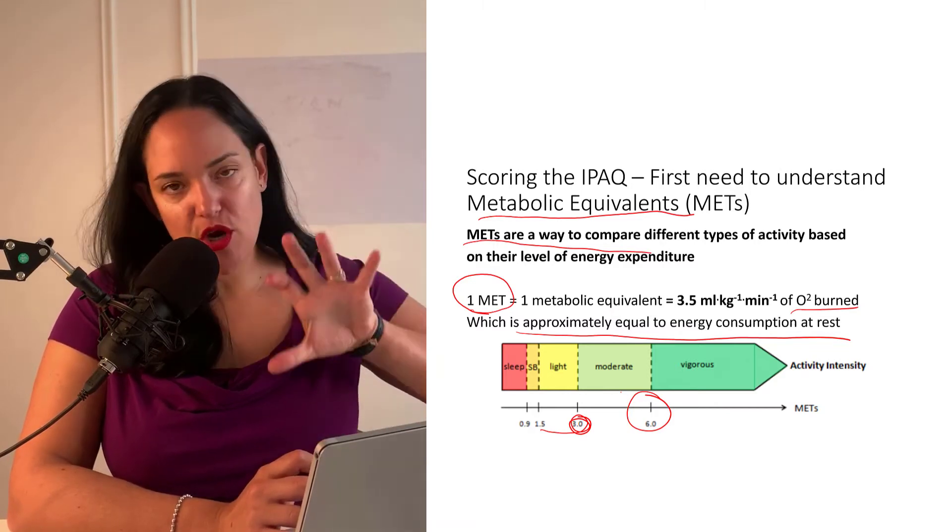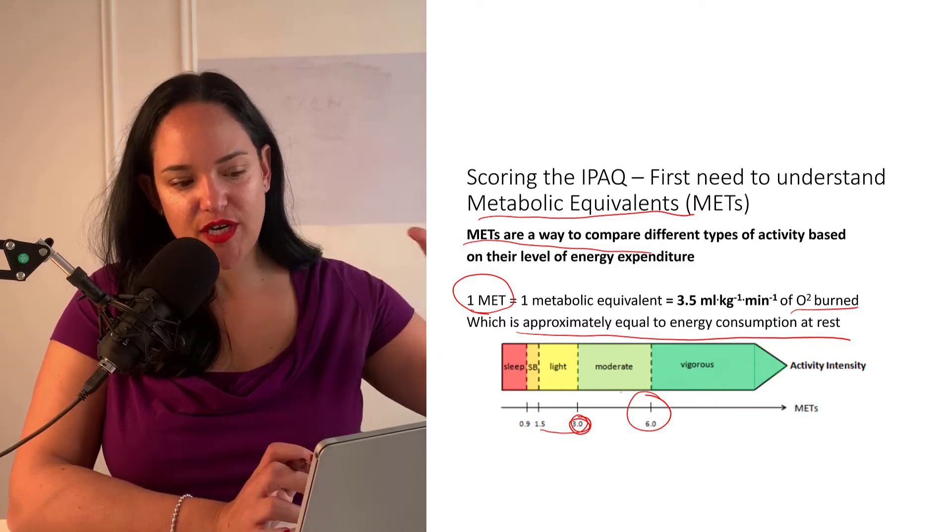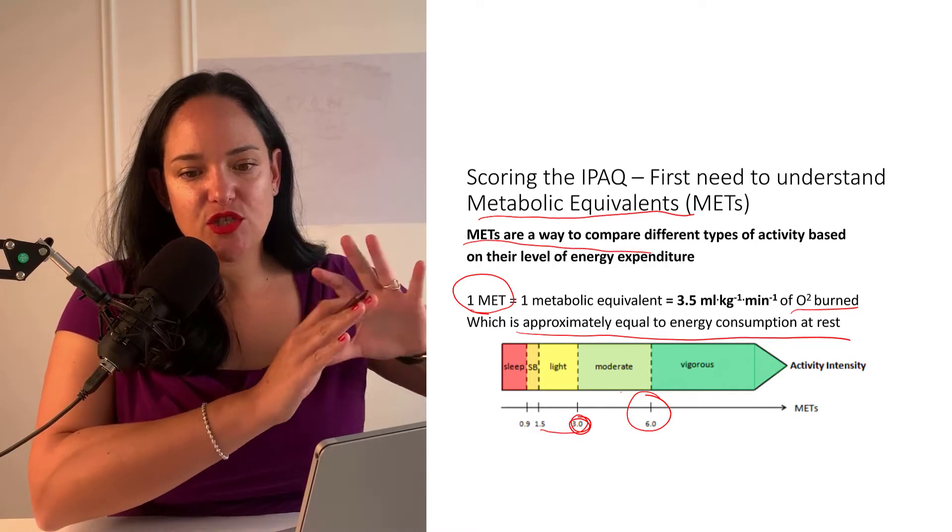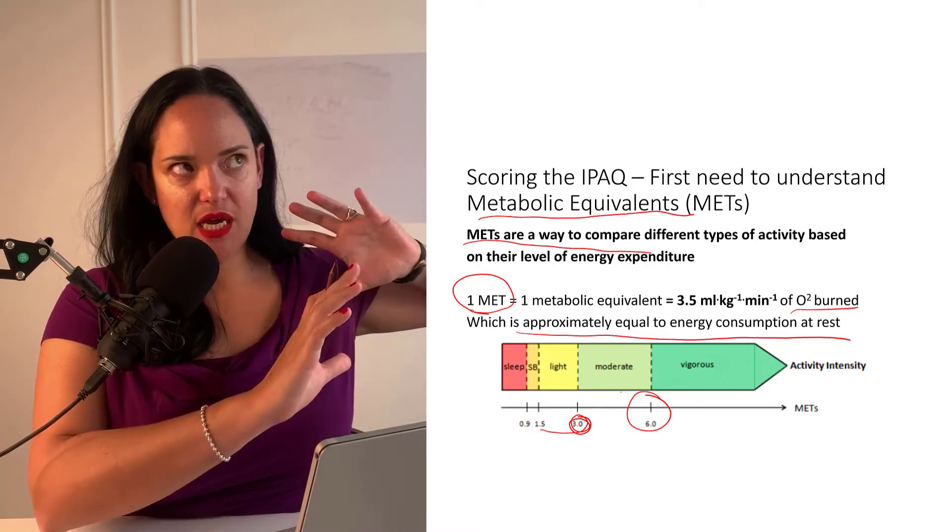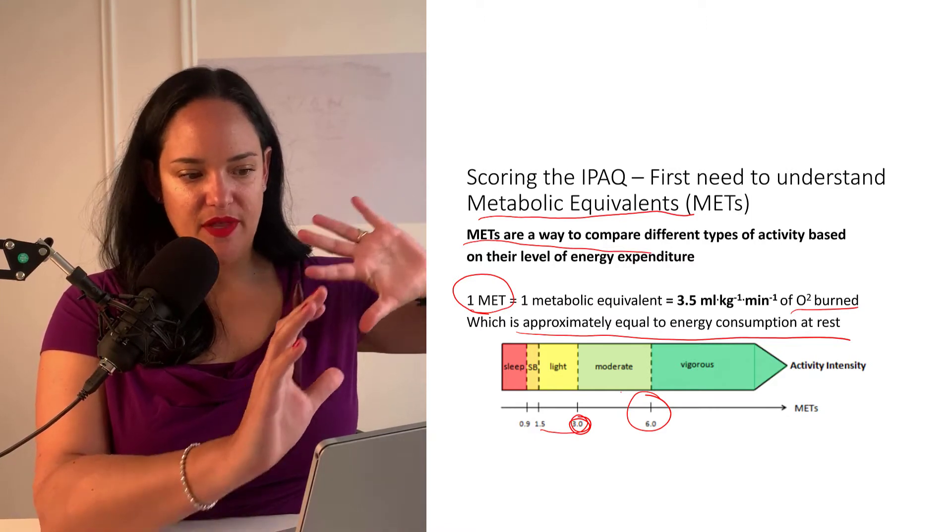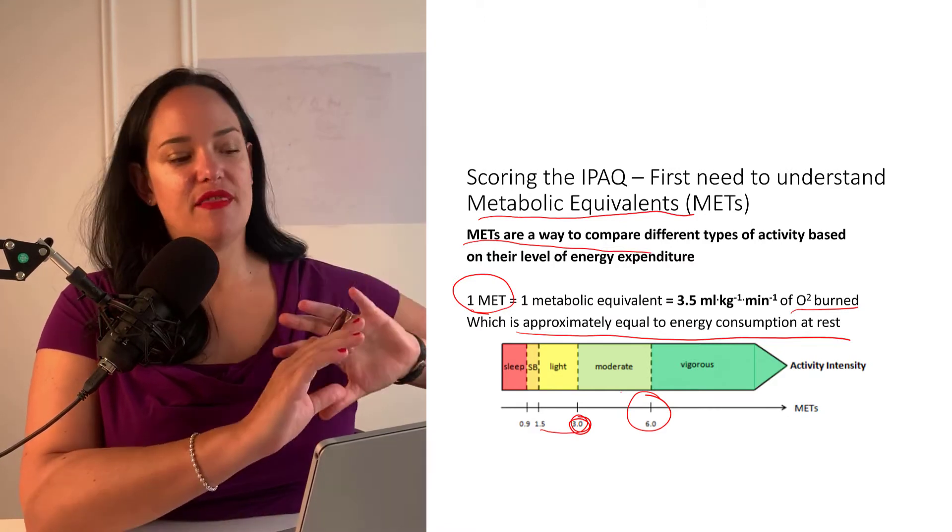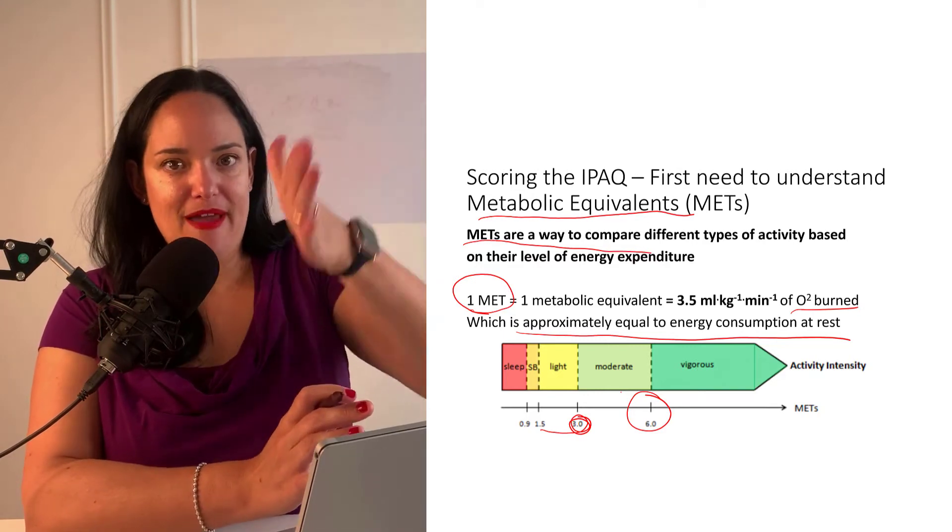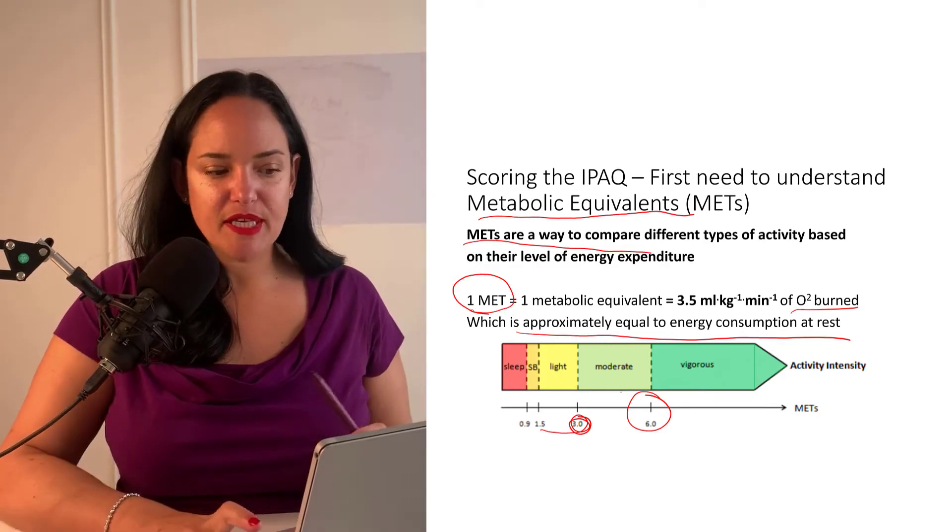So once we know the metabolic equivalents of certain activities, then we can start putting, kind of adding up all the activities and putting them into a standard form, that MET amount that we can then use to compare different people that have completed that survey.